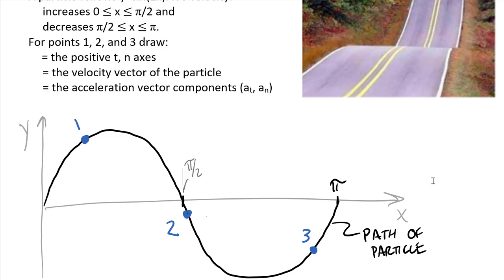For point 1, the particle is moving along this curve from left to right, so our tangent axis is tangent to that curve and our normal axis is toward the center of curvature, pointing back in this direction. The velocity is always in the tangent direction — that's v1 as a vector. For the acceleration: the particle is increasing in speed between 0 and π/2, so the tangential acceleration a_t is also going in the direction of that velocity. We also have a_n in the normal direction — that's our tangential component and our normal component.